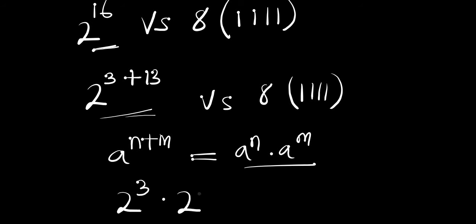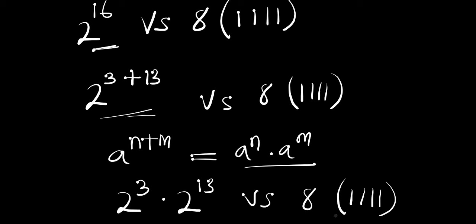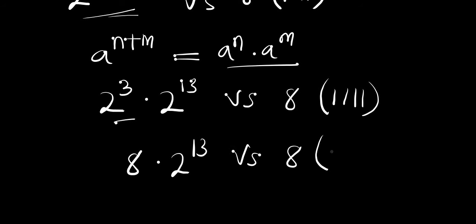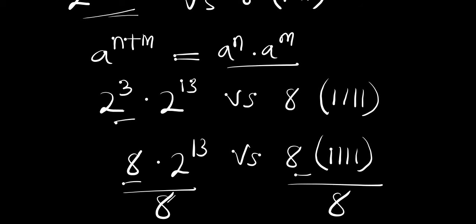Applying that identity means we are going to have two power three times two power thirteen, versus eight times 1111. Now two power three is eight, so we have eight times two power thirteen versus eight times 1111. Since we have eight on both sides we can divide by eight — eight cancels eight — so we are now comparing two power thirteen versus 1111.